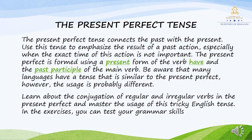The present perfect tense connects the past with the present. Use this tense to emphasize the results of a past action, especially when the exact time of this action is not important. The present perfect is formed using a present form of the verb 'have' and the past participle of the main verb. Be aware that many languages have a tense similar to the present perfect; however, the usage is probably different. Learn about the conjugation of regular and irregular verbs in the present perfect and master the usage of these tricky English tenses.